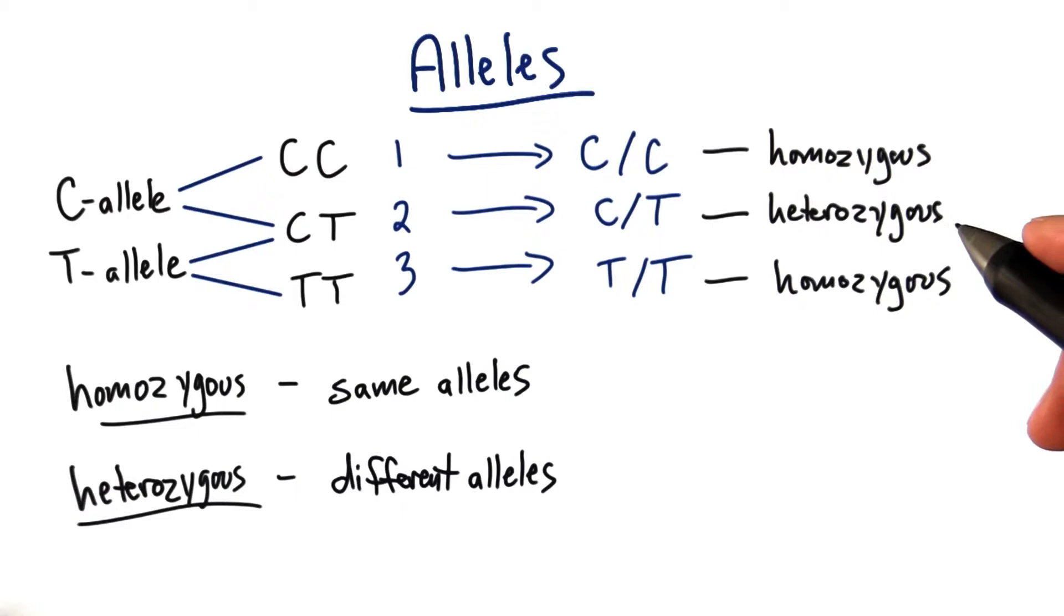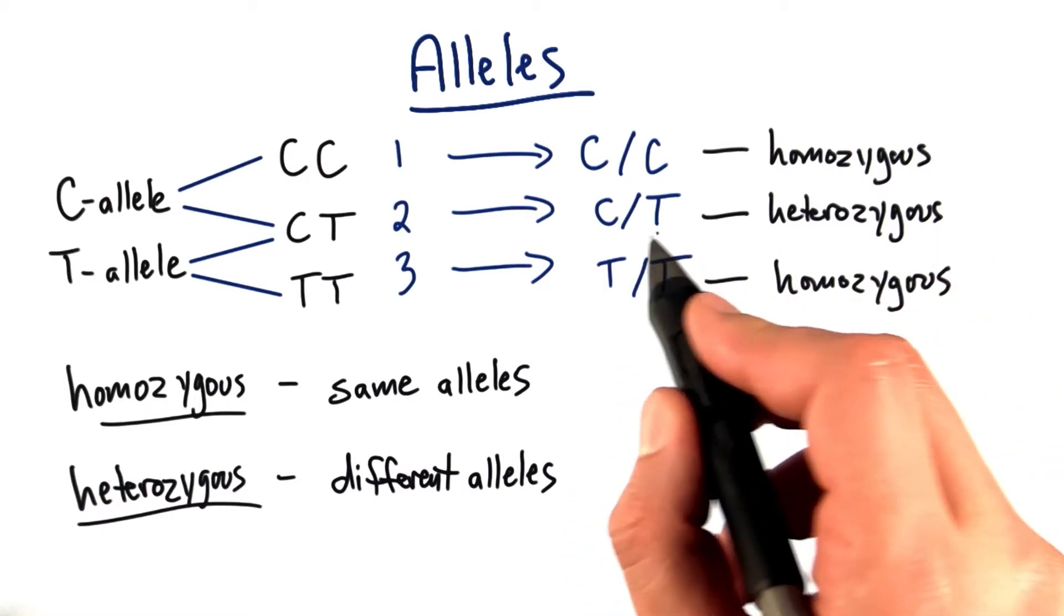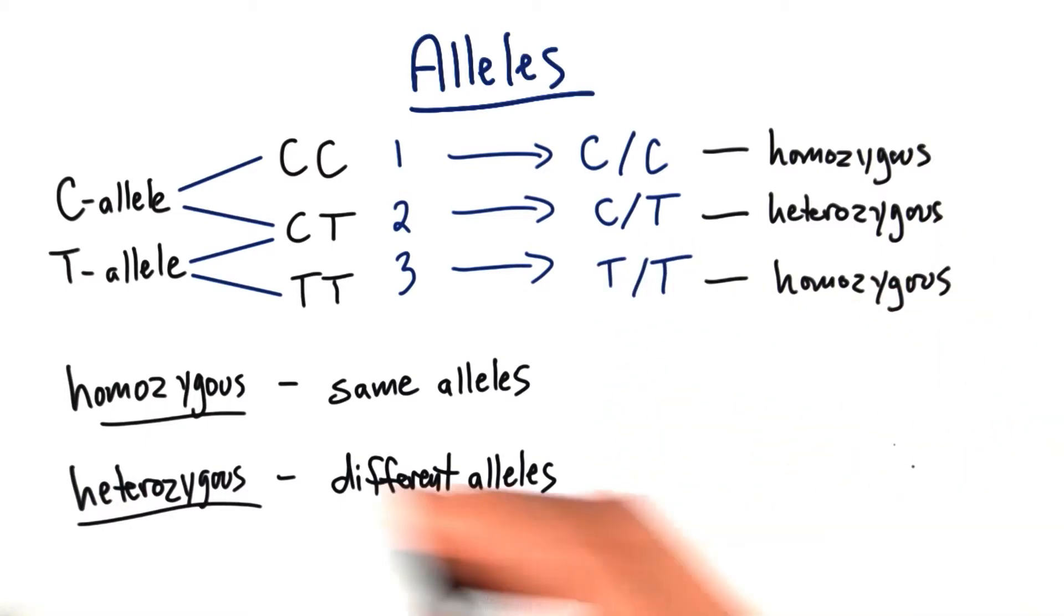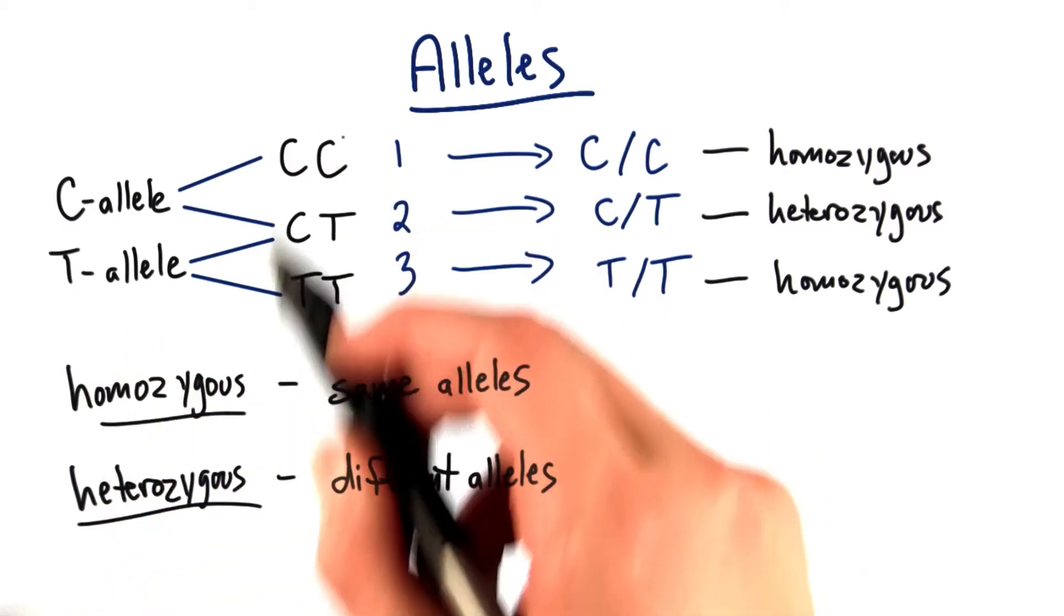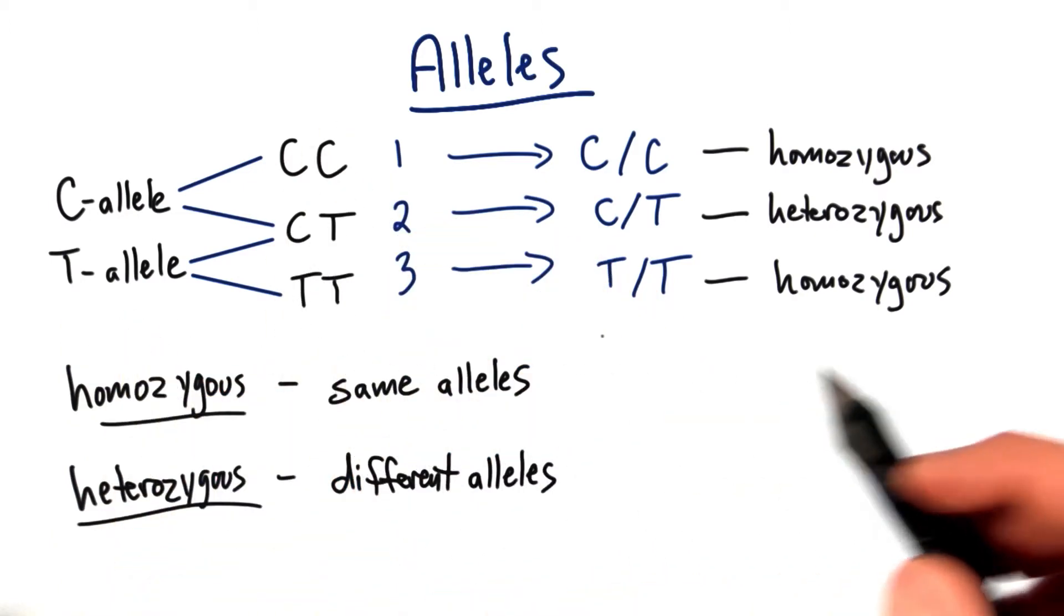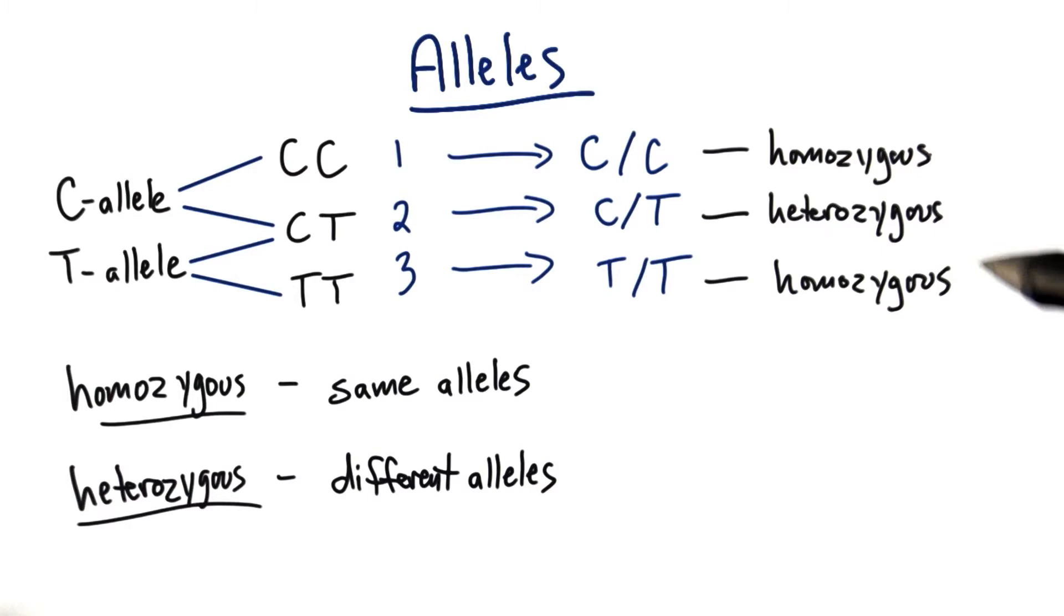And we have the heterozygous combination, meaning different alleles in the combination. So in this case, we have one heterozygous option, the cytosine thymine pair. So having two alleles allows three allelic combinations, where two of them are homozygous and one of them is a heterozygous combination.